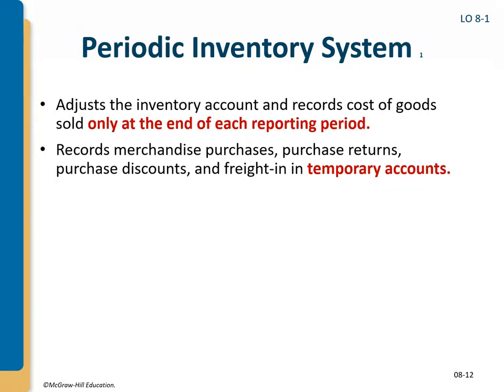The periodic system works a little differently. We don't record the removal of inventory every time we sell something. Instead, we wait till the end of the year, count what's left, and determine what everything we could have sold minus what's still here — that's what was sold. Instead of having a journal entry debiting cost of goods sold and crediting inventory after each sale, we have one journal entry at the end of the year for all the cost of goods sold. The journal entries and accounts used are a little different too.